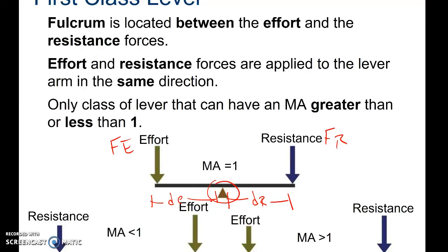A first class lever can have a mechanical advantage greater than one, less than one, or equal to one, depending on where the fulcrum is positioned.